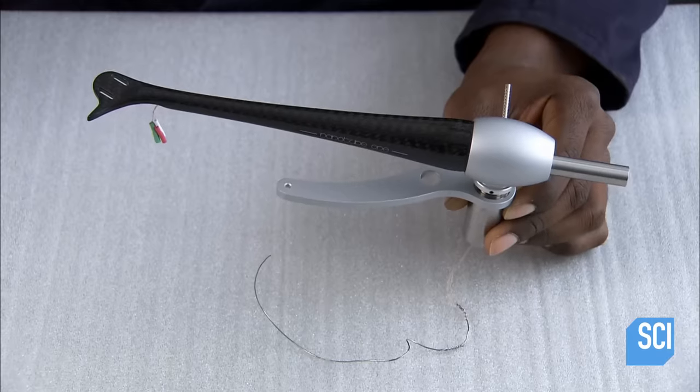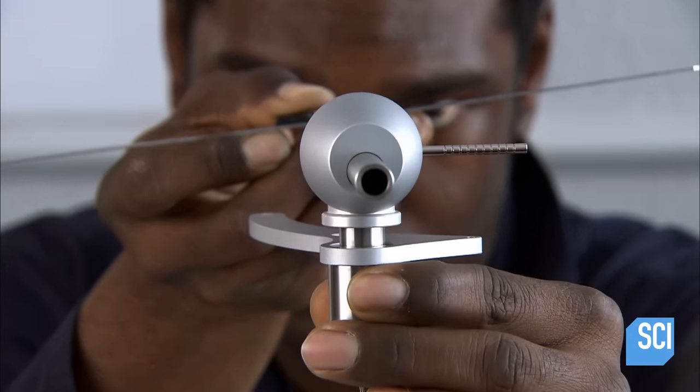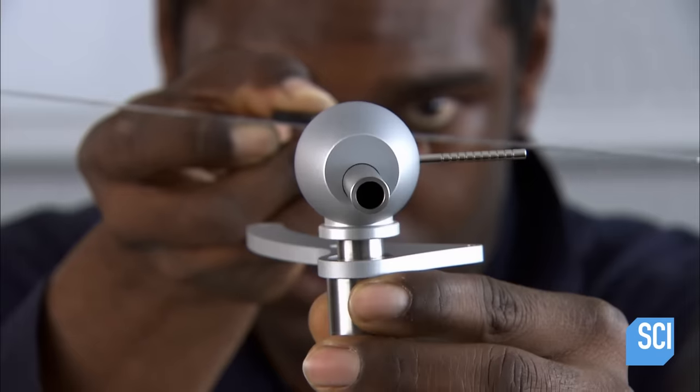But before it totally bonds, the technician scrutinizes the alignment. He makes adjustments if needed, and then he'll clamp the assembly to allow the glue to cure.